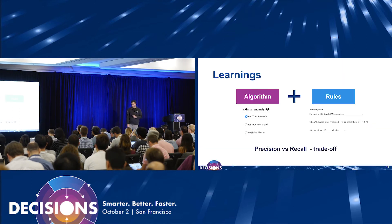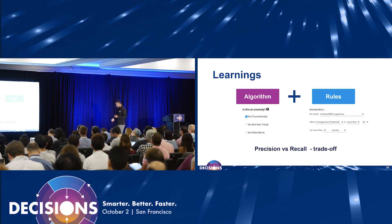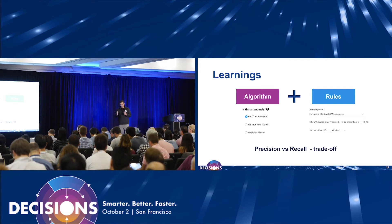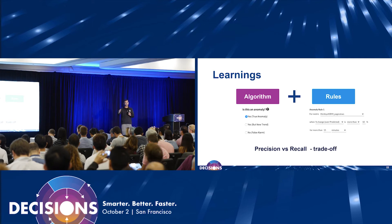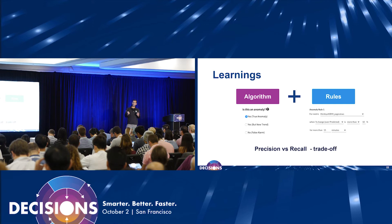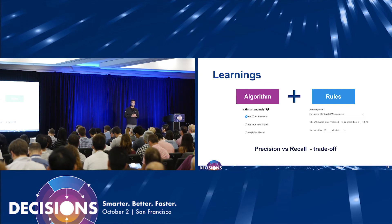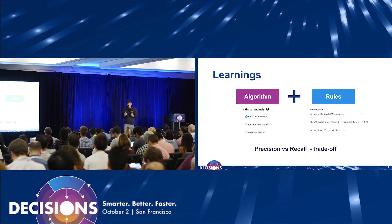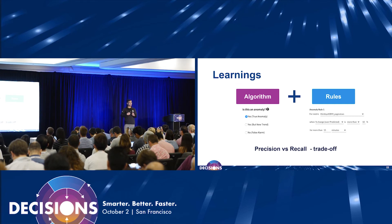The key learning here was that initially we had one system which was purely rule-based, and then we tried another which was purely algorithm-based. Over time, what we really learned is that neither of these alone can achieve the goal of high precision and high recall. We had to do a hybrid approach which allows the algorithm to learn from feedback, but at the same time allows users to input their domain knowledge into the system.